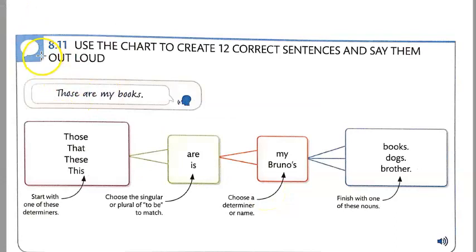This is the last lesson for student book level one, unit one, lesson eight. 8.11. Use the chart to create 12 correct sentences and say them out loud.